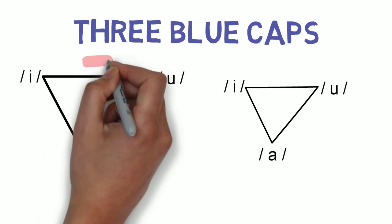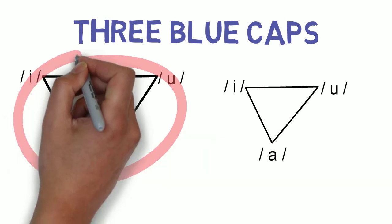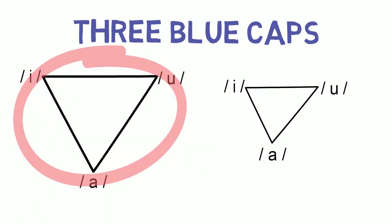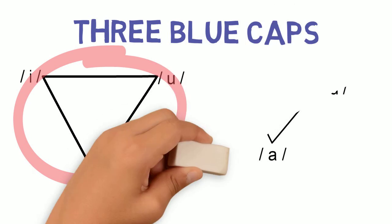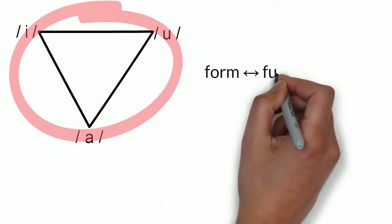A larger vowel space provides greater clarity to talk. Studies into infant-directed speech have found that often caregivers use larger vowel spaces when talking to babies.